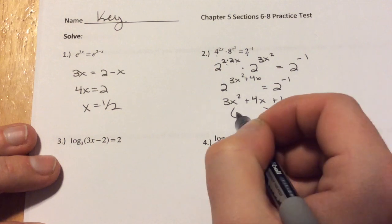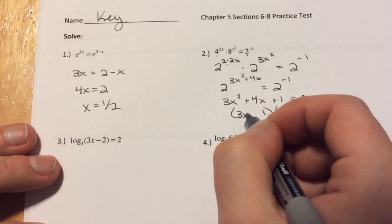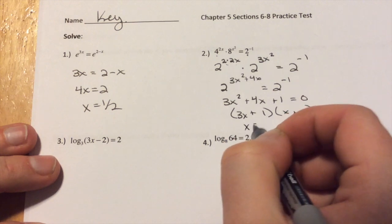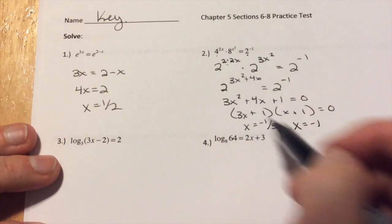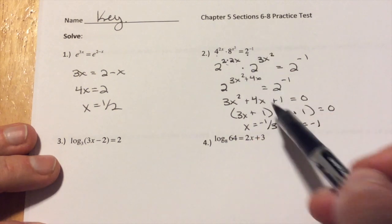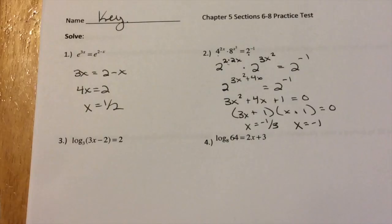So then we get 3x squared plus 4x, add the 1 to the other side, plus 1 equals 0. Write out my factors, so that's 3x and x, 1, 1, plus, plus, so x equals negative 1 third, or x equals negative 1. In this case, exponentials can be negative, so there are our two answers.